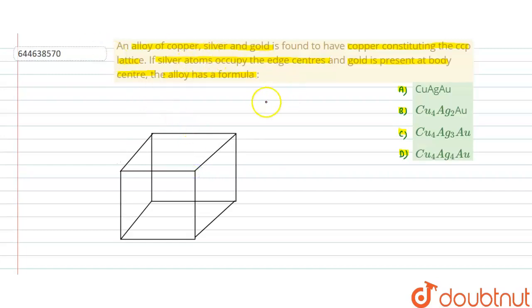So now first copper. Let's denote these red balls by copper. For copper we use red balls. The copper constituent is CCP, which is also FCC. So FCC meaning is all the corners plus face centers.